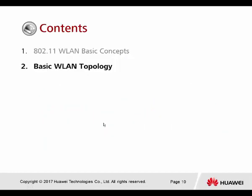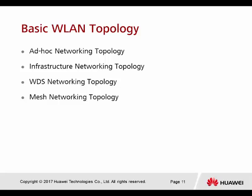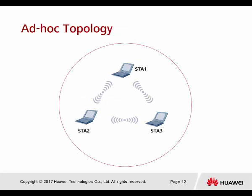Moving to content number two: basic WLAN topology. The WLAN topologies include ad hoc network topology, infrastructure, WDS, and mesh networking topology. The first is the ad hoc topology. In this connection mode, the BSS is called independent BSS, because all PCs don't need to connect through an AP — they can form a connection by themselves using ad hoc or hotspot features.